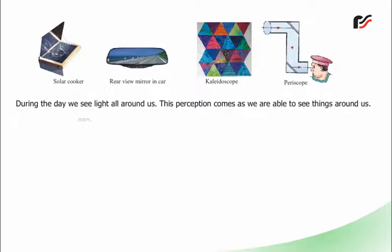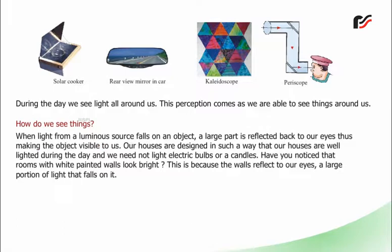During the day we see light all around us. This perception comes as we are able to see things around us. How do we see things? When light from a luminous source falls on an object, a large part is reflected back to our eyes, thus making the object visible to us. Our houses are designed in such a way that they are well-lighted during the day and we need not light electric bulbs or candles. Have you noticed that rooms with white painted walls look bright? This is because the walls reflect to our eyes a large portion of light that falls on it.